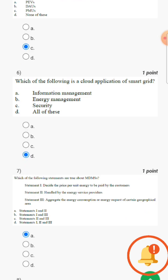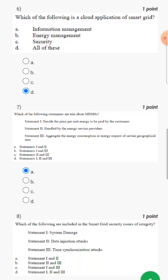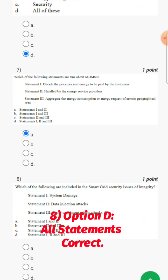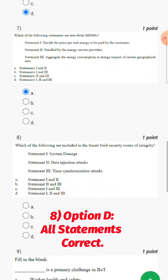Then we have which one of the following are included in smart grid security issues of integrity? So here all options are correct and answer is D.